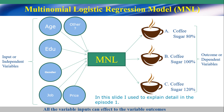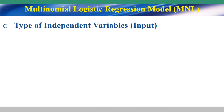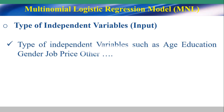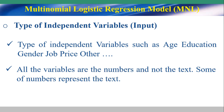In this slide, I used to explain detail in episode 1. Let me show you the type of independent variable or input. Types of independent variable include Age, Education, Gender, Job, Price, and other variables. All the variables are numbers and not text. Some of the numbers represent text.